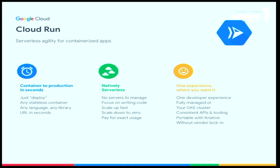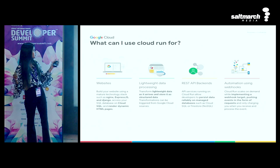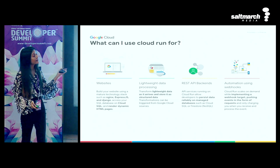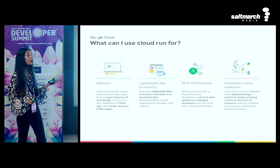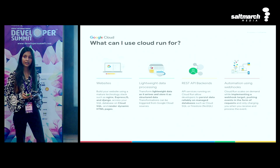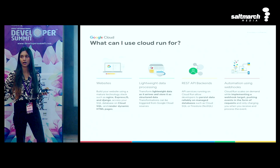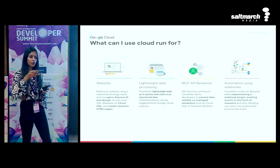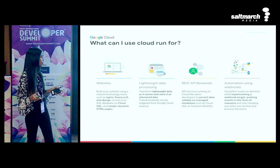I've talked about Cloud Run. To show you in the console - the use cases include your website, lightweight data processing, and with jobs you can do heavy data processing. It could be your API backend or it could be used to automate various tasks in your architecture. You could have a workflow with different elements and put triggers in front of Cloud Run to automate that whole process workflow.